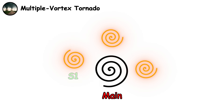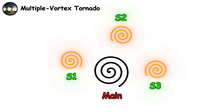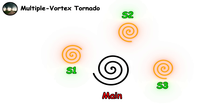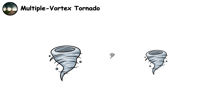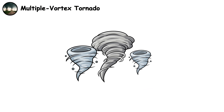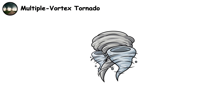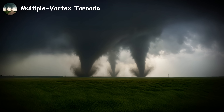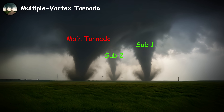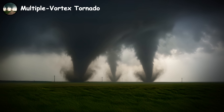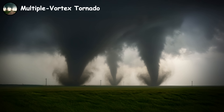Each sub-vortex has its own rotation, creating localized areas of extreme damage within the larger tornado's path. The sub-vortices can have wind speeds significantly higher than the parent tornado's overall circulation. While the main tornado might be rated EF3, individual sub-vortices could reach EF4 or EF5 intensity.